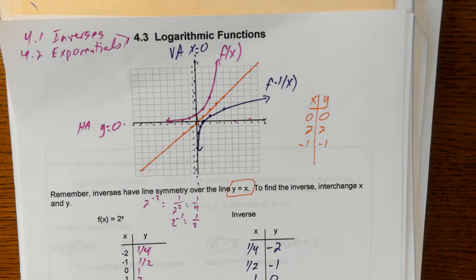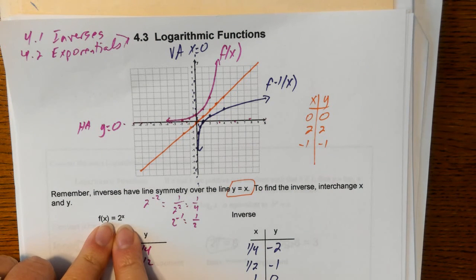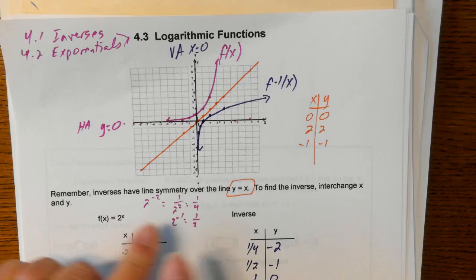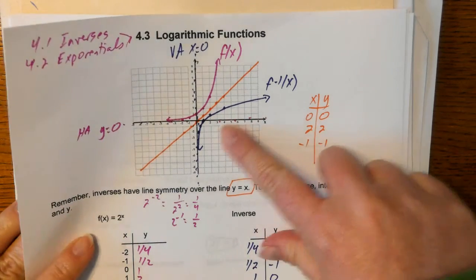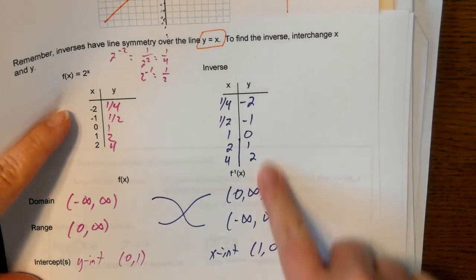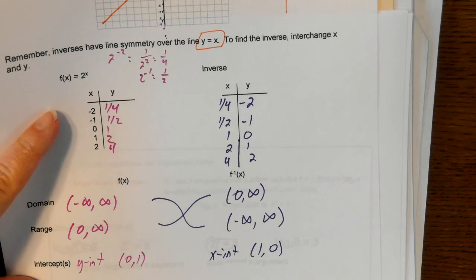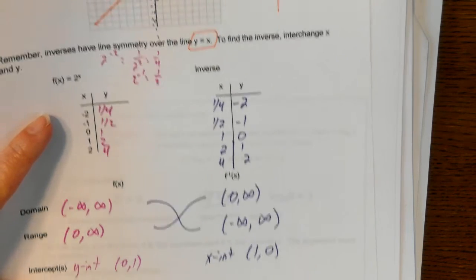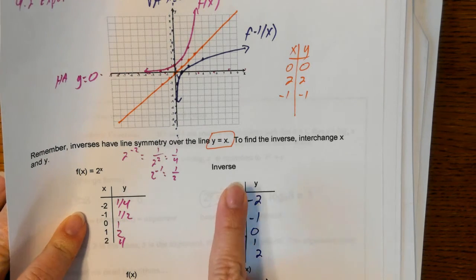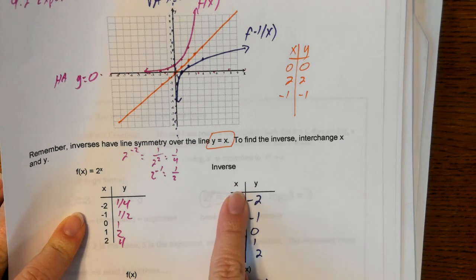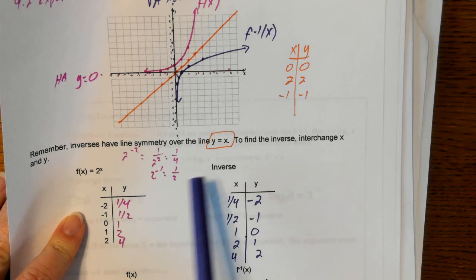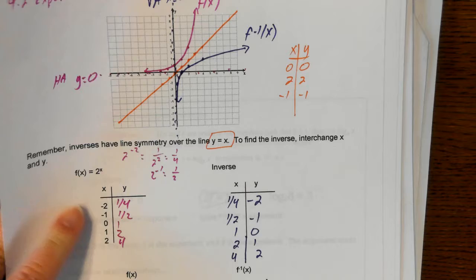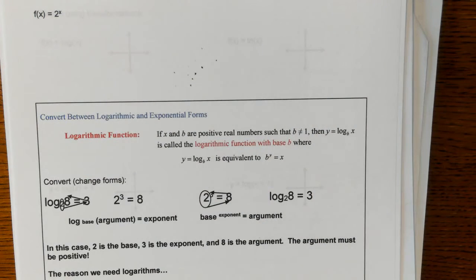So notice what we've done: we graphed an exponential, we graphed the inverse, found lots of ordered pairs, drew the picture, and know the domain, range, and all these details about this inverse function. What we do not know is the equation. So we need to figure out what the equation is of this inverse function that we just graphed.